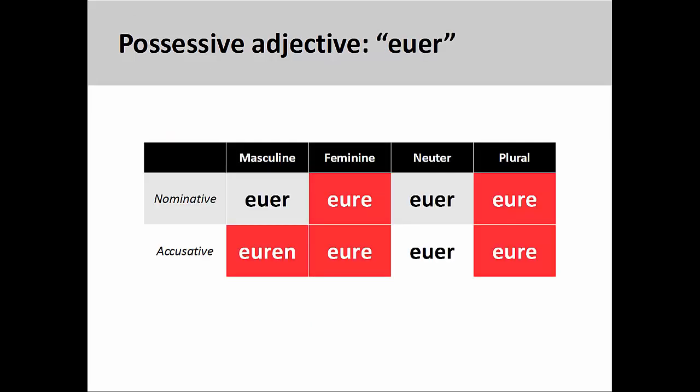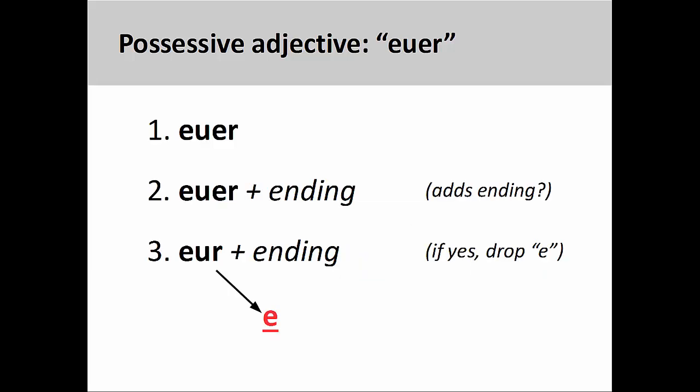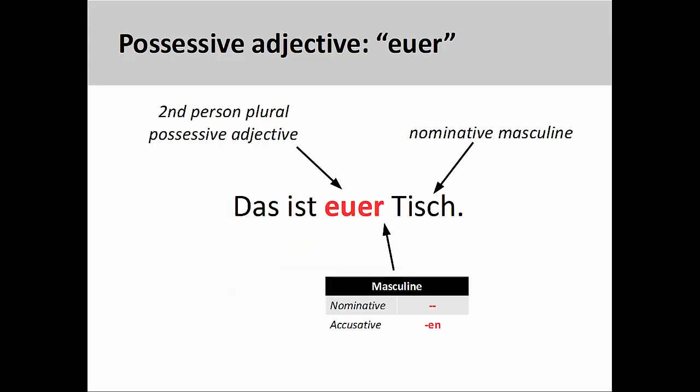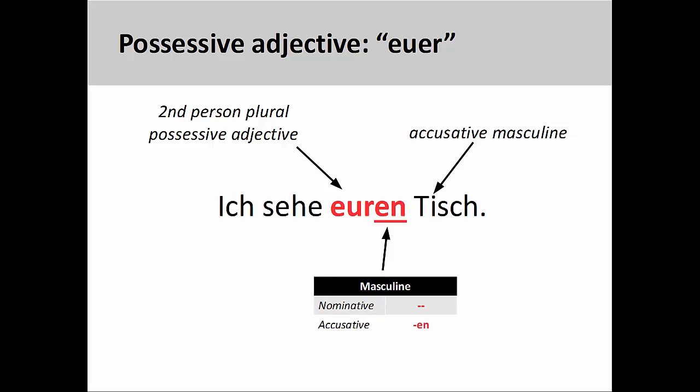Finally, as you see on this screen, it is important to note that the second person plural possessive adjective 'euer' has some unusual forms in the nominative and accusative. The rule here is that if 'euer' adds an ending when being declined, then the second 'e' in the root will be dropped. So in this sentence, we don't remove 'e' from the root since the possessive adjective modifies a noun that is the subject of the sentence — the adjective is therefore in the nominative case and does not take an ending. However, in this sentence, we remove 'e' from the root since the possessive adjective modifies a noun that is the direct object of the sentence, and the adjective must therefore have a masculine accusative ending.